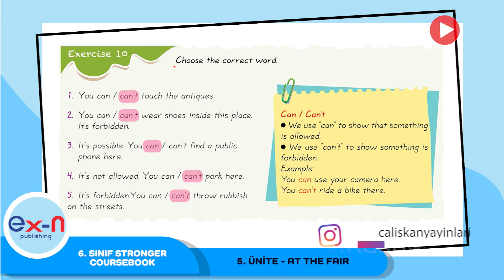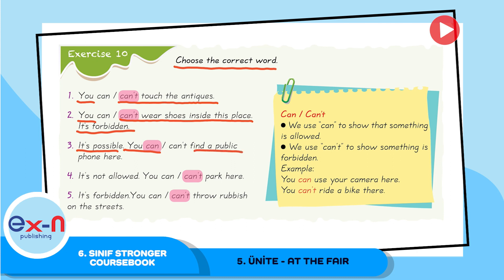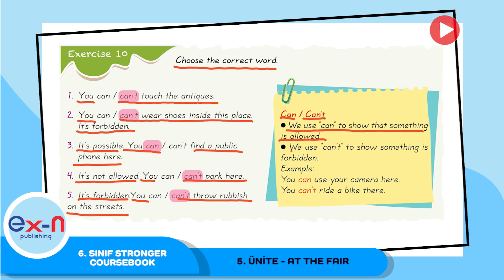Exercise 10: Choose the correct word. You can't touch the exhibits. You can't wear shoes inside this place — it's forbidden. It's possible. You can find a public phone here. It's not allowed. You can't park here — it's forbidden. You can't throw rubbish on the streets. Can and can't: we use can to show that something is allowed, and we use can't to show something is forbidden. For example: you can use your camera here; you can't ride a bike there.